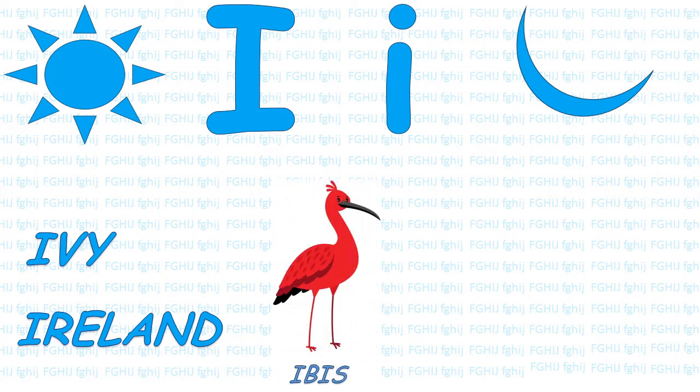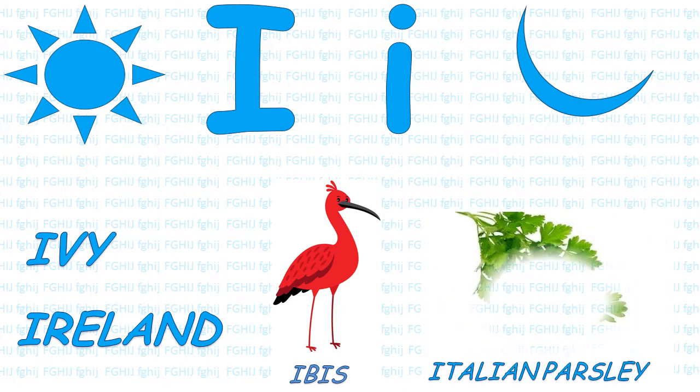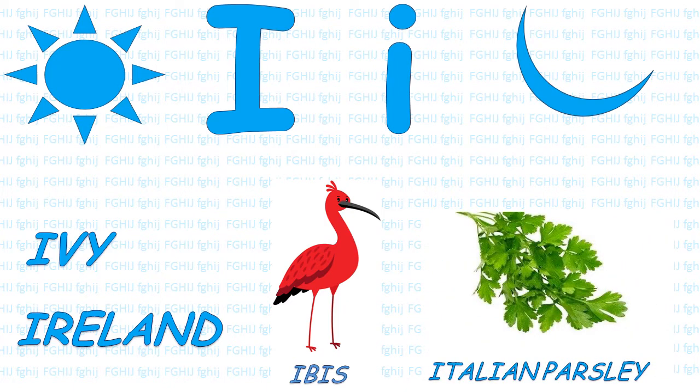This is Ibis. I, B, I, S — Ibis. This is Italian parsley. This is a vegetable — Italian parsley. Let's go to next.